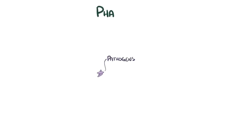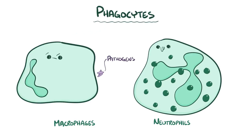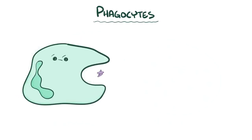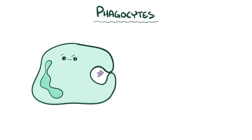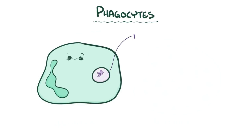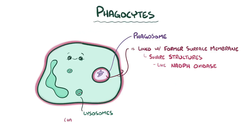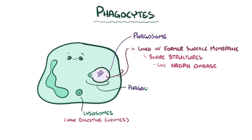Normally, when a pathogen invades the body, phagocytes like neutrophils and macrophages are the first ones on the scene. When a phagocyte detects a pathogen, it stretches itself out as if it had two little arms. These arms wrap around the pathogen and seal back up, forming a vesicle inside the phagocyte called a phagosome. Because the phagosome is lined by what was previously the phagocyte's surface membrane, structures that were surface-bound, like the protein complex NADPH oxidase, end up being inside the phagosome. The phagocyte also has organelles like lysosomes, which are full of digestive enzymes that can destroy a pathogen. When a lysosome fuses with a phagosome, it forms a phagolysosome, and lysosomal enzymes start to destroy the pathogen.